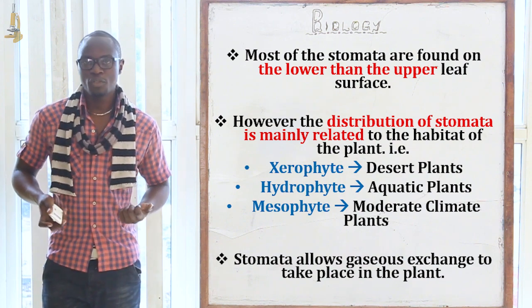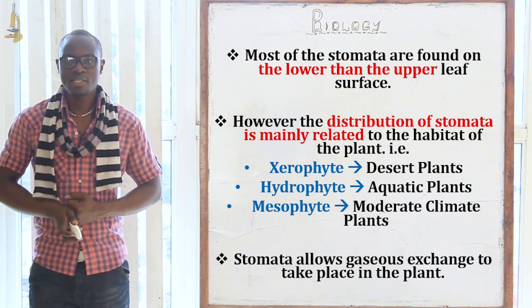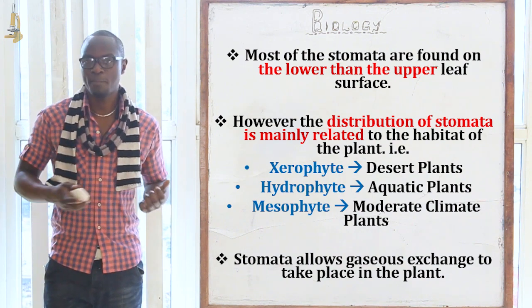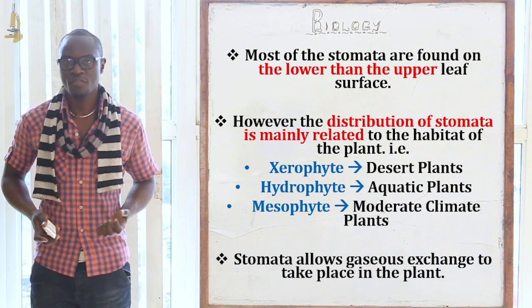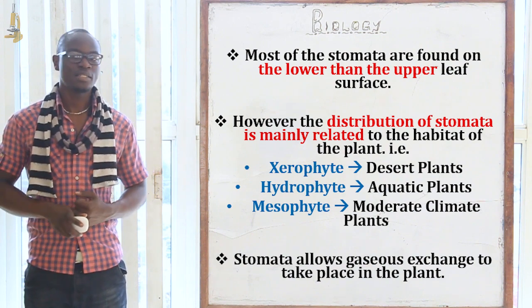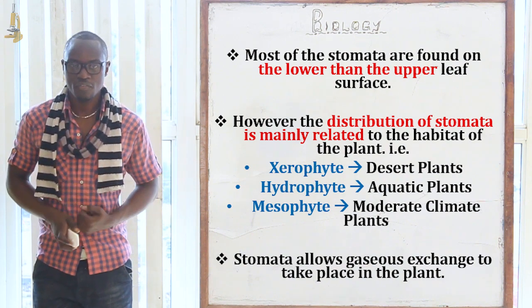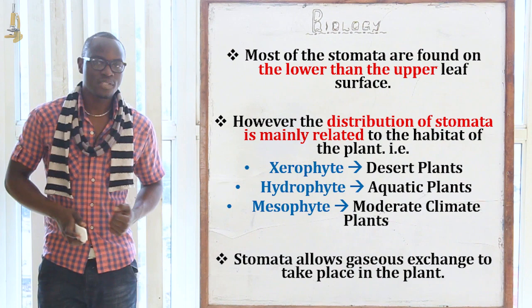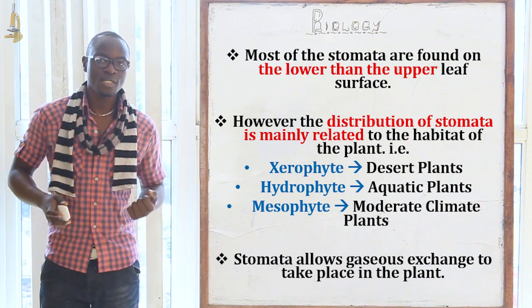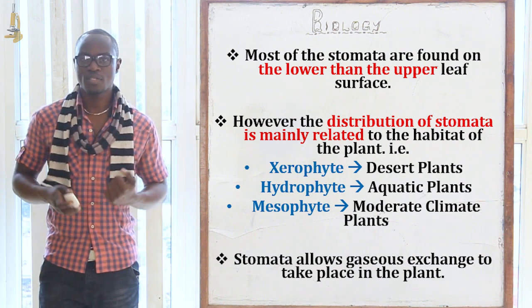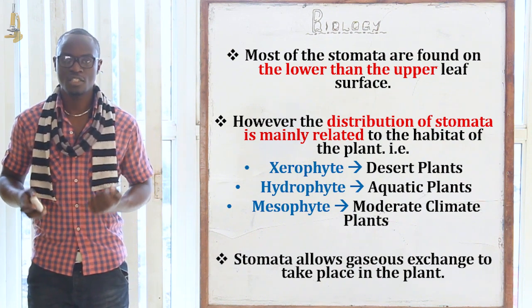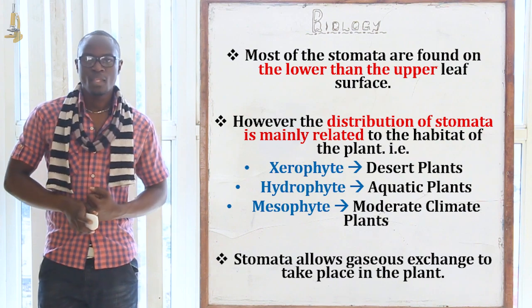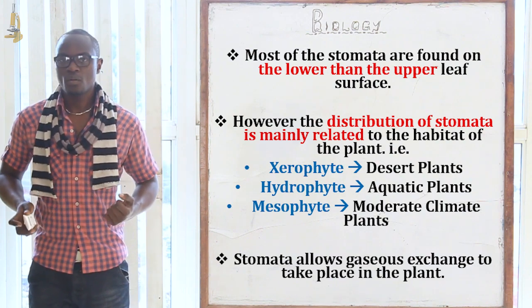The distribution of stomata is mainly related to the habitat of the plant — whether it is a xerophyte, a mesophyte, or a hydrophyte. Basically, stomata allow gaseous exchange to take place in the plant.